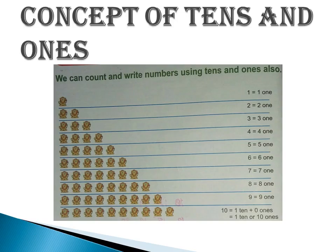We use ones place to write any number from 1 to 9. 1 equals 1 one, 2 equals 2 ones, 3 equals 3 ones, 4 equals 4 ones, 5 equals 5 ones, 6 equals 6 ones, 7 equals 7 ones, 8 equals 8 ones, 9 equals 9 ones.